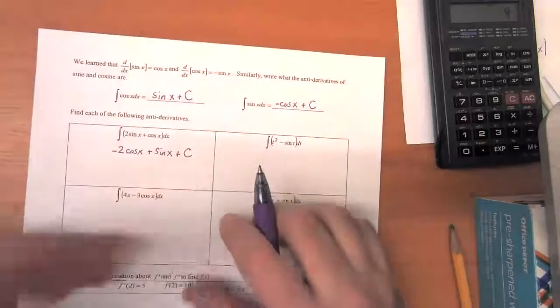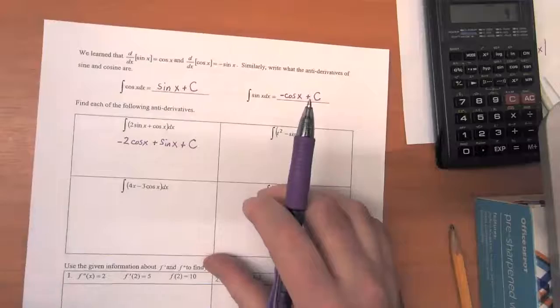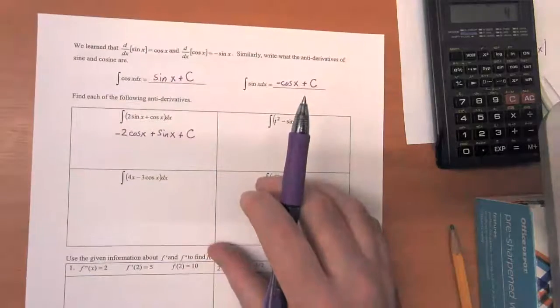So it's just the same trick as what we have before. We just have these extra little toolkits of things that we know the antiderivative of.